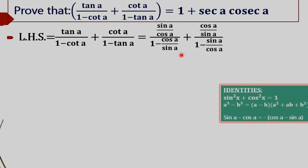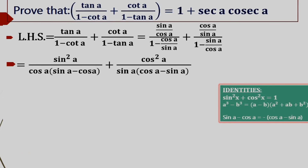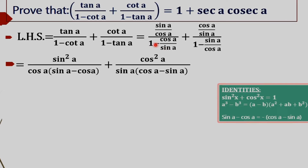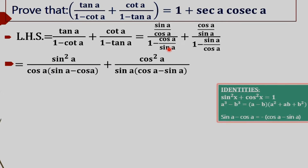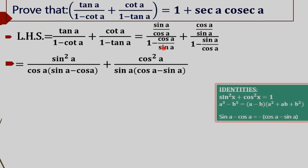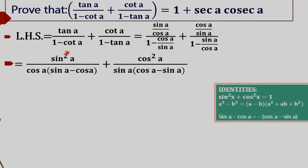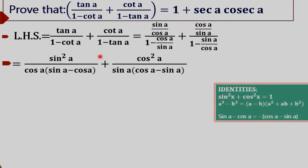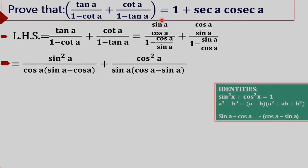In the next step we take the LCM of the denominator. The LCM of the first term's denominator gives us (sin A - cos A) all divided by sin A. The sin A goes to the numerator directly, and we get sin² A in the numerator.